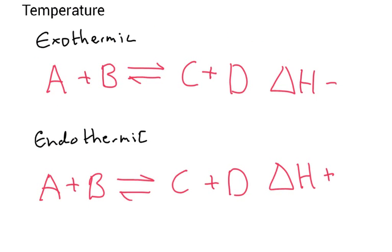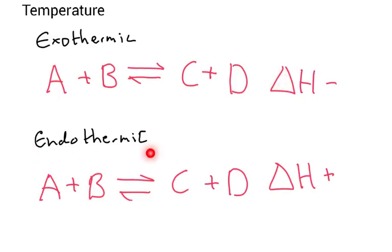Let's look at temperature in more detail. Here I've got two different types of reaction: an exothermic reaction, where moving in the forward direction releases heat, and an endothermic reaction, where moving in the forward direction removes heat from the system.